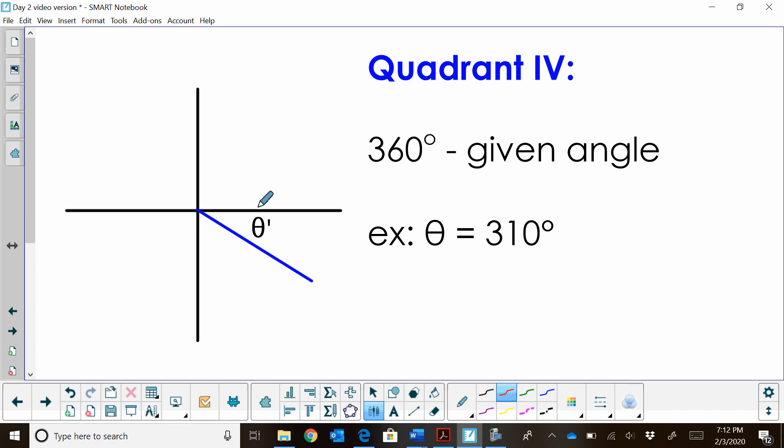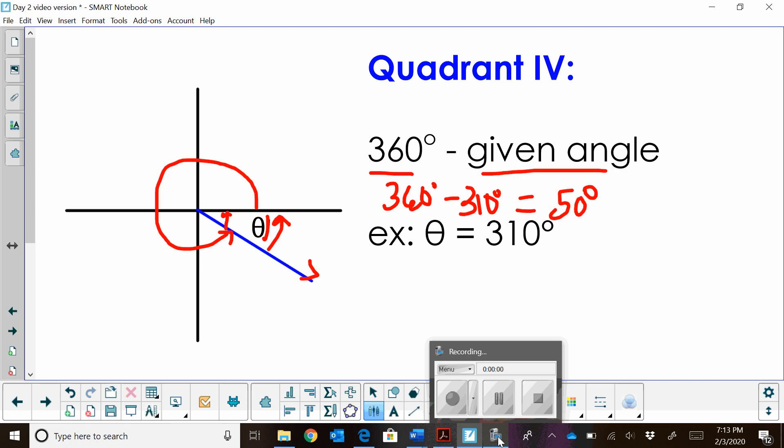And then in quadrant 4, we're circling around the circle. Our terminal side ends in quadrant 4. We haven't quite made it all the way back to the x-axis. So how far away are we? We take 360 and subtract the given angle. So 360 minus 310 in this example would give us 50 degrees. So all of our angles are positive. All of our angles fall between 0 and 90, and we're drawing them back to that x-axis. And that's how you find reference angles in the unit circle.